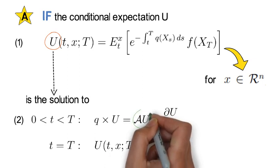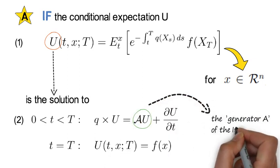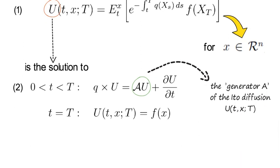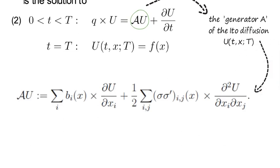Where AU is the generator of the Ito diffusion U, and it's defined to be the following.